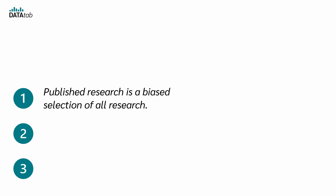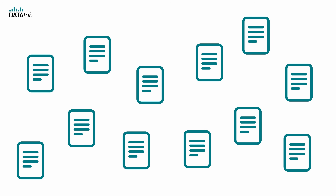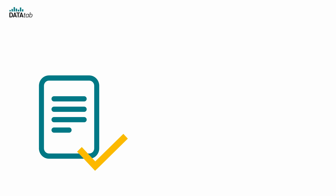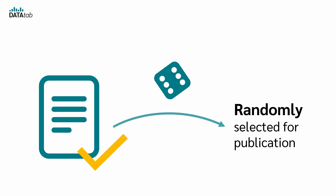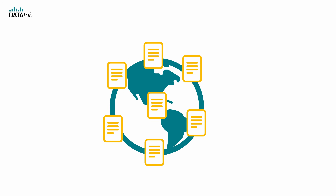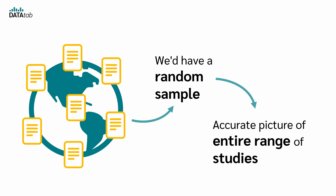Let's start with the first problem: published research is a biased selection of all research. The idea behind this is that not all research conducted is eventually published — some of it is published and some is not. Imagine that after verifying the research has been conducted carefully and everything is accurate, the study is then randomly selected for publication. This would provide a true representation of all the research conducted — statistically speaking, a random sample that offers an accurate picture of the entire range of studies. But unfortunately, that is not the case.